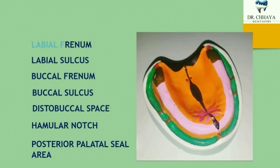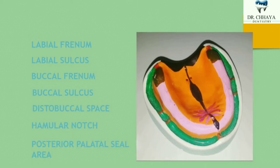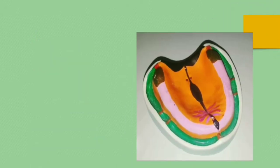The first is the labial phrenum, second is the labial sulcus, third is the buccal phrenum, fourth is the buccal sulcus, fifth is the distobuccal space, sixth is the hamular notch, and seventh is the posterior palatal seal area. From an examination point of view, the posterior palatal seal area is the most important topic. Let's see them one by one in detail.